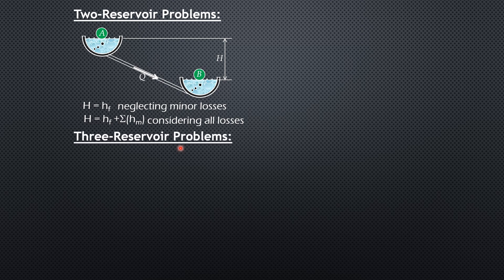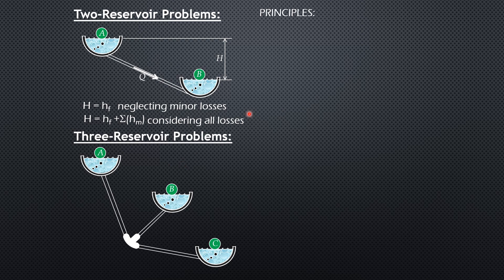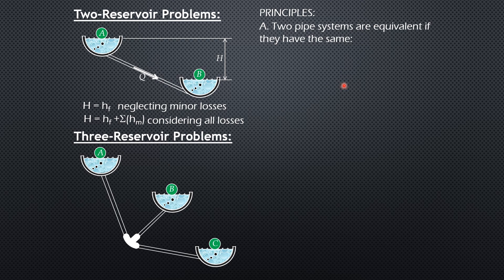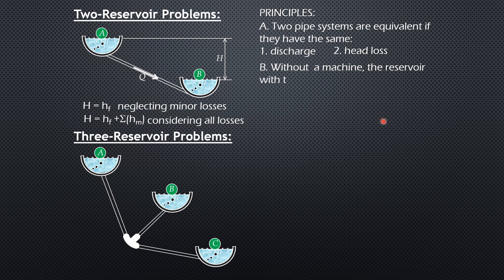Now let's have the principles on three-reservoir problems. Before we proceed, here is a very important principle: two pipe systems are equivalent if they have the same discharge and the same head loss. This was already discussed in the preceding lecture on series and parallel pipes. When you change a system with another system, make sure that these two conditions are satisfied for the systems to be equivalent.